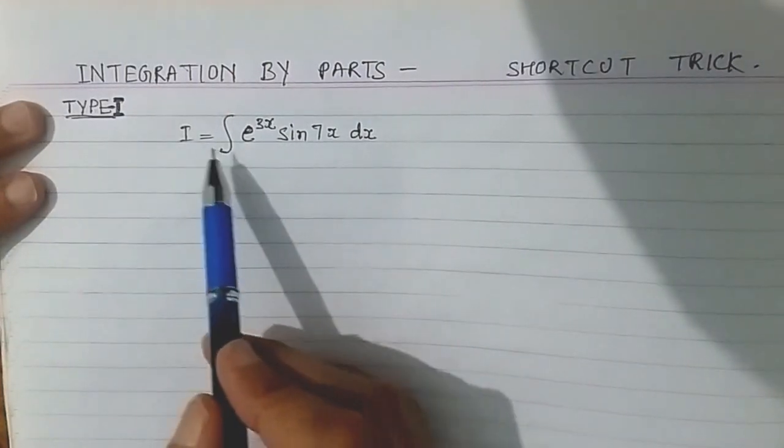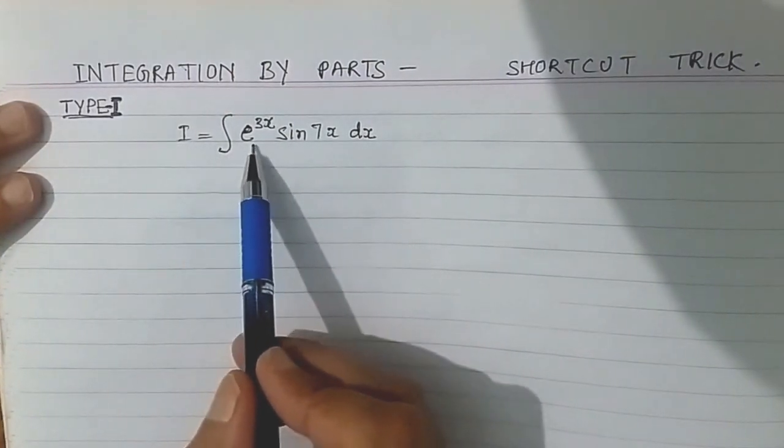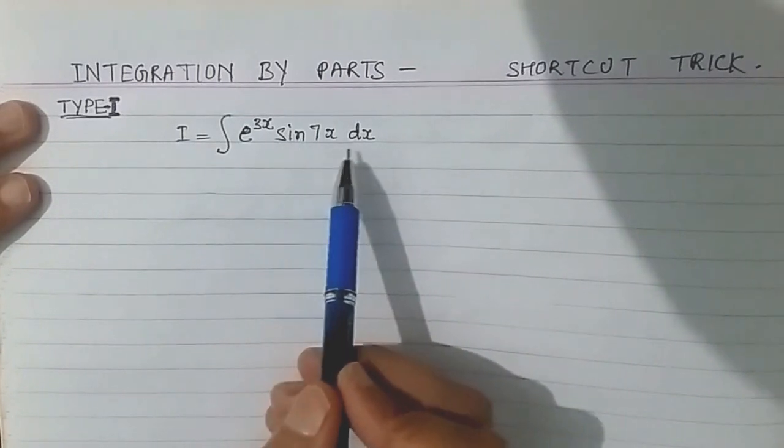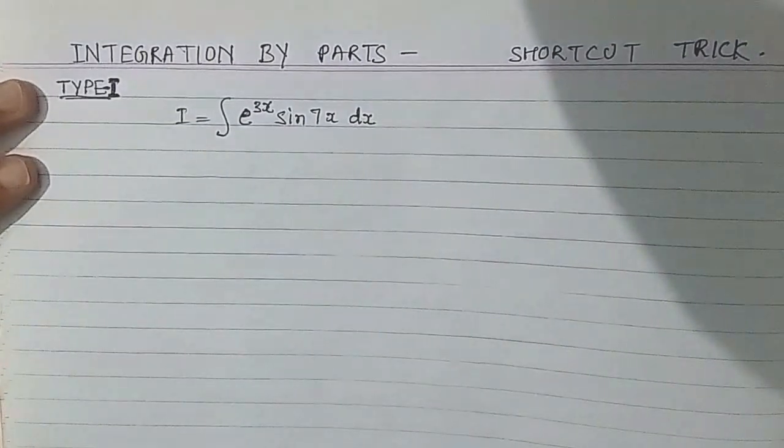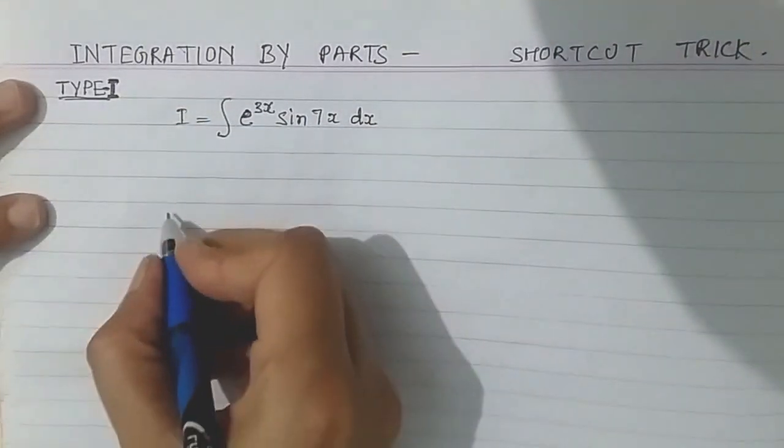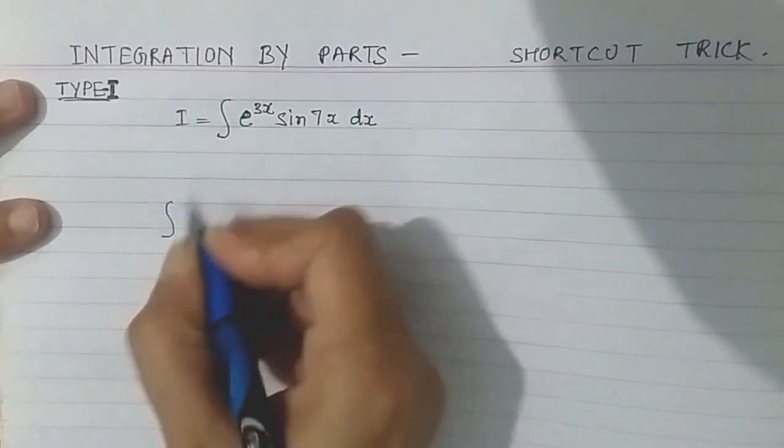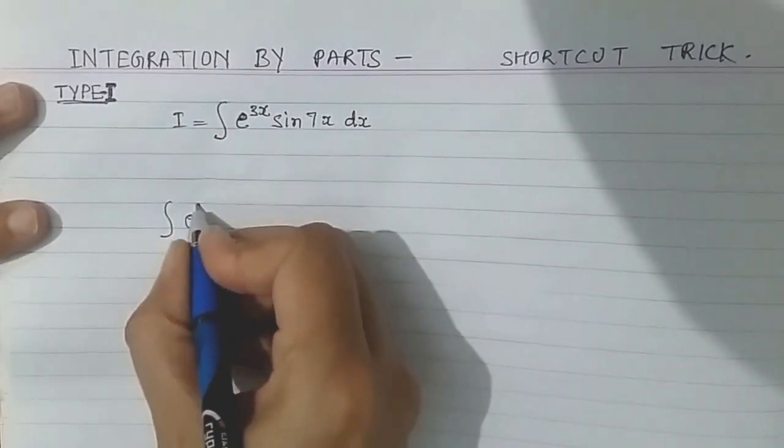Let us start with type 1. My integral is e raised to the power 3x sine 7x dx. For doing such type of questions I have a shortcut method. I will generalize the concept. Let this be e raised to the power ax sine bx dx.